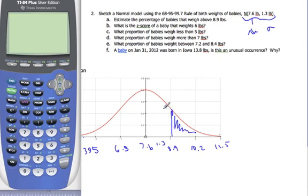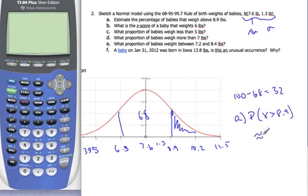Well, I know this is 68. From here to here is 68. So the tails are 100 minus 68, which is 32. By symmetry, they're equal, so I know that the probability of my weight, x being bigger than 8.9, is approximately 32 divided by 2 is 16%. That's my estimate based upon the sketch.